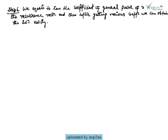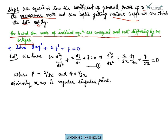The last step is: we equate to zero the coefficient of the general power of x to obtain the recurrence relation, and then after getting various coefficients, we can obtain the solution easily. We will now take an example based on the case where the roots of the indicial equation are unequal and not differing by an integral value.